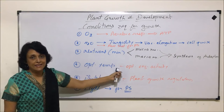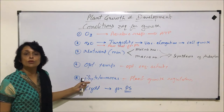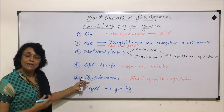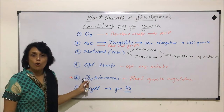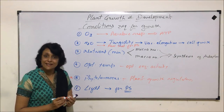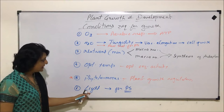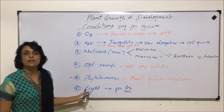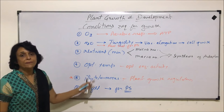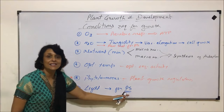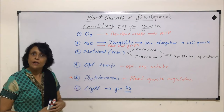Optimum temperature is needed for enzymatic activity to take place properly. Phytohormones are the growth regulators — we will study all phytohormones in detail: how they have been derived, where they are produced, and their functions. And light — the details of light we have already studied in the chapter of photosynthesis — is also very essential for plant growth because plants synthesize their own food, and that food is essential for their growth.